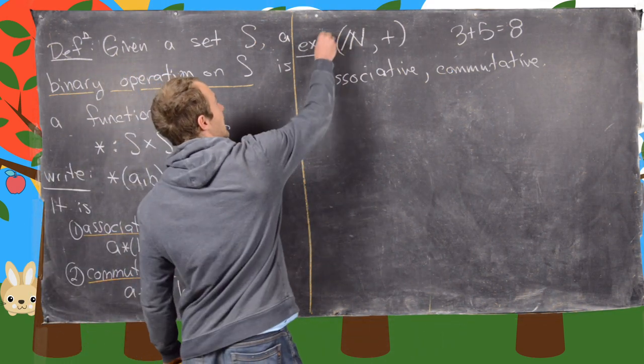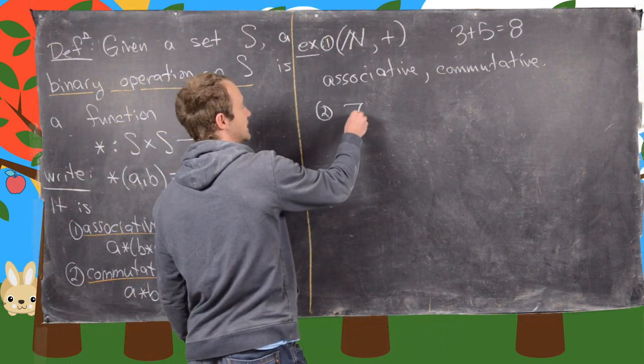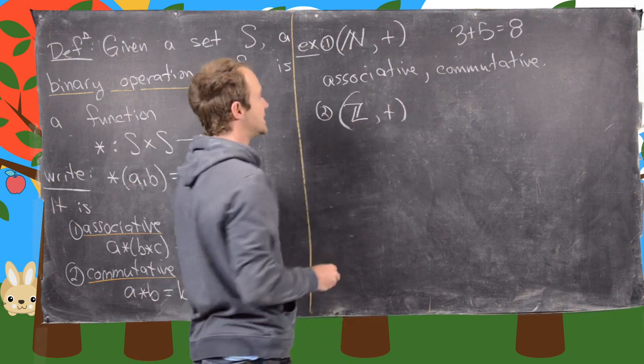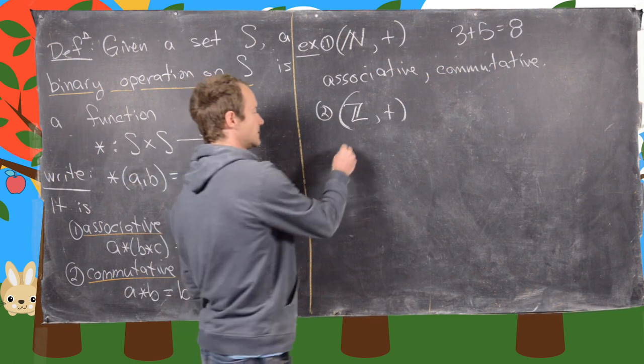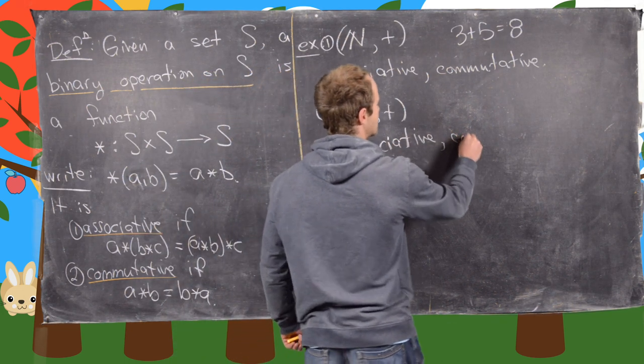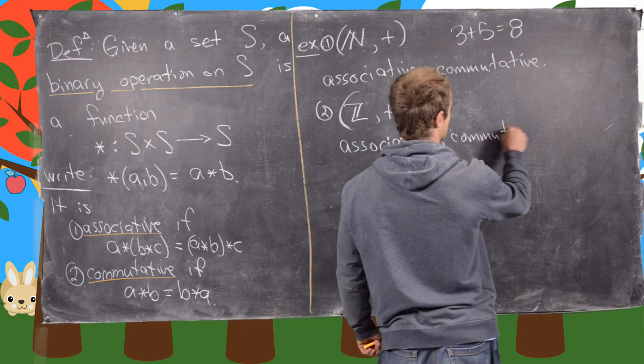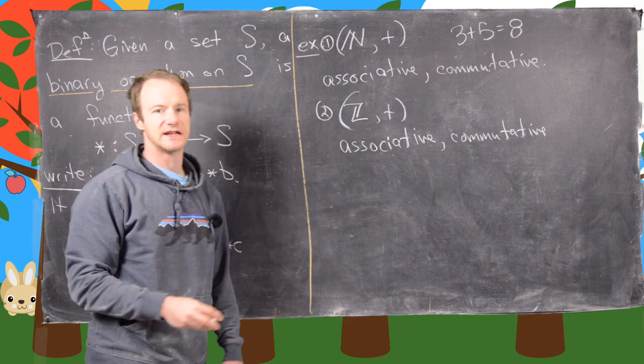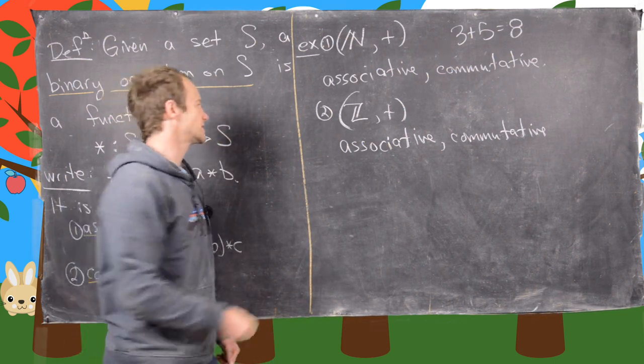But if we expand this a little bit to the integers with addition, we do have associativity. So it's associative. It is commutative. And then we also have inverses and an identity and stuff like that. So let's look at some more.